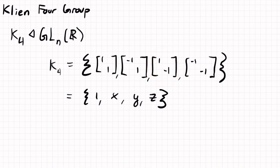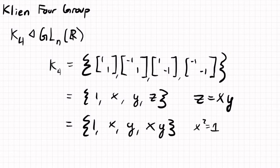So it would be like z equals x times y. So we could write it as 1, x, y, x, y. And of course, x squared is one, and y squared is one.